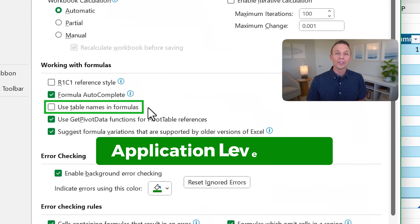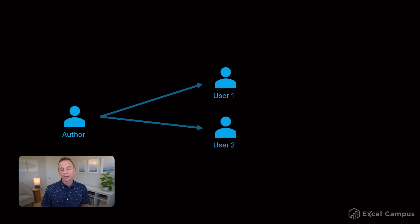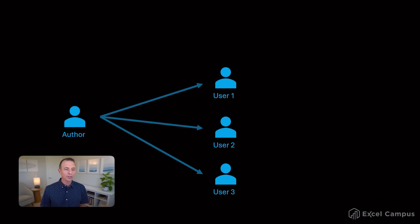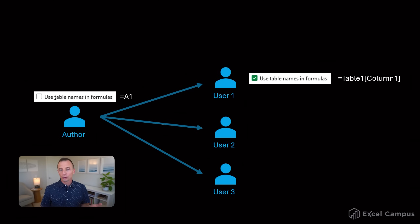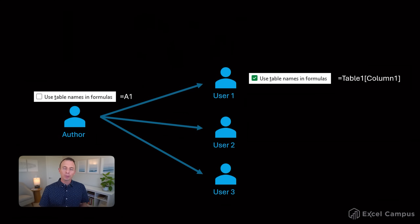The other challenge is that this is an application-level setting, and this becomes a challenge when sharing files with other users. If we turn that setting off, we see regular range references. But if we share our workbook with a user who has the setting on — which is the default — they will still see structured references. When we turn the setting off in our workbook and share it, it does not turn that setting off for them. The setting does not travel with the workbook; it stays with the user's computer.